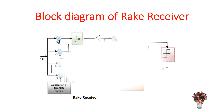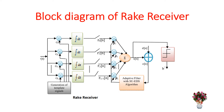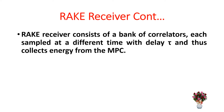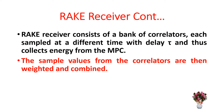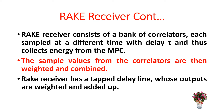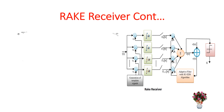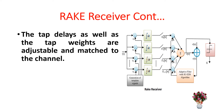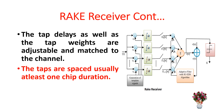The block diagram representation of a rake receiver is shown here. Rake receivers consist of a bank of correlators, each sampled at a different time with delay tau, and this collects energy from the multipath components (MPC). The sample values from the correlators are then weighted and combined. The rake receiver has a tapped delay line whose outputs are weighted and added up. The tapped delays as well as the tapped weights are adjustable and matched to the channel, with taps spaced usually at least one chip duration apart.